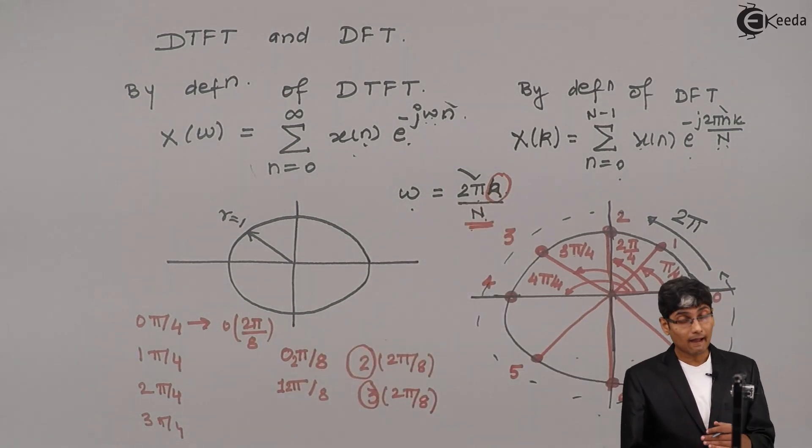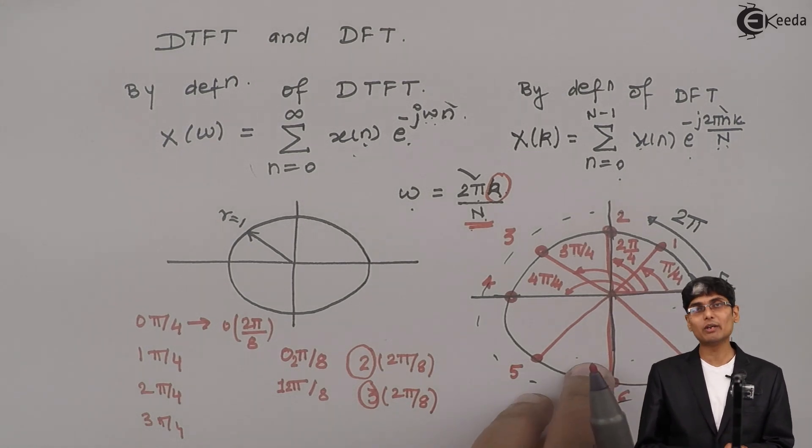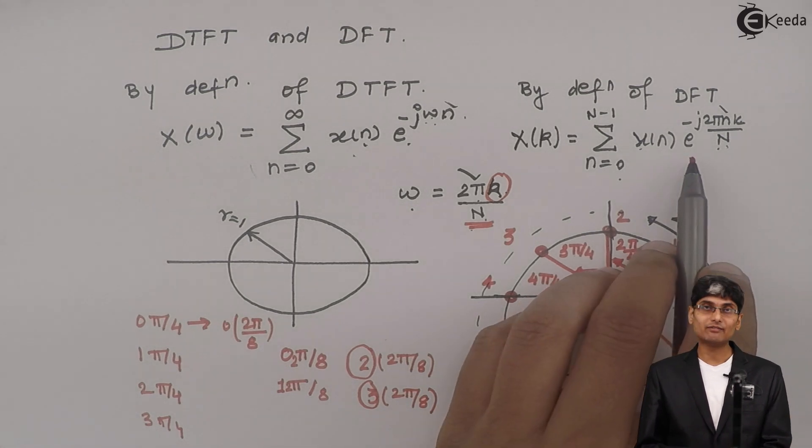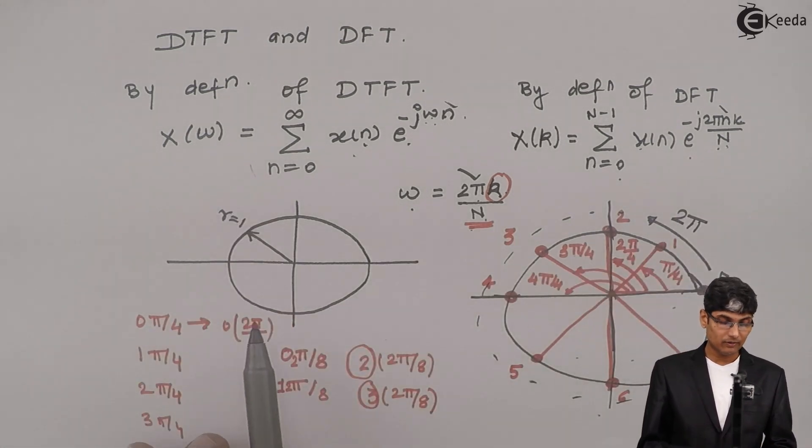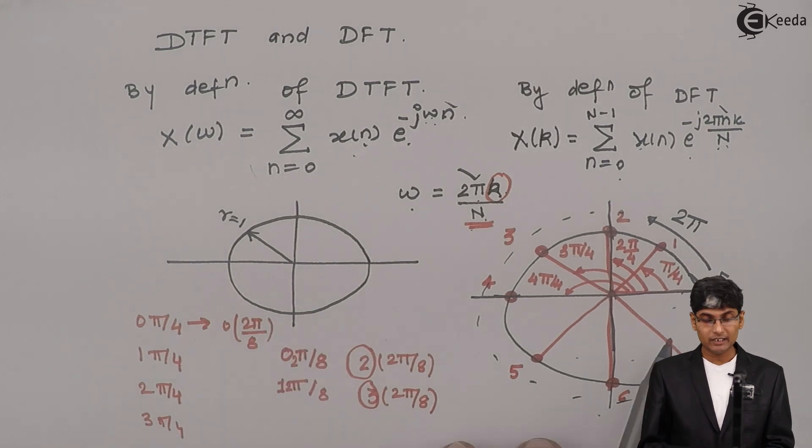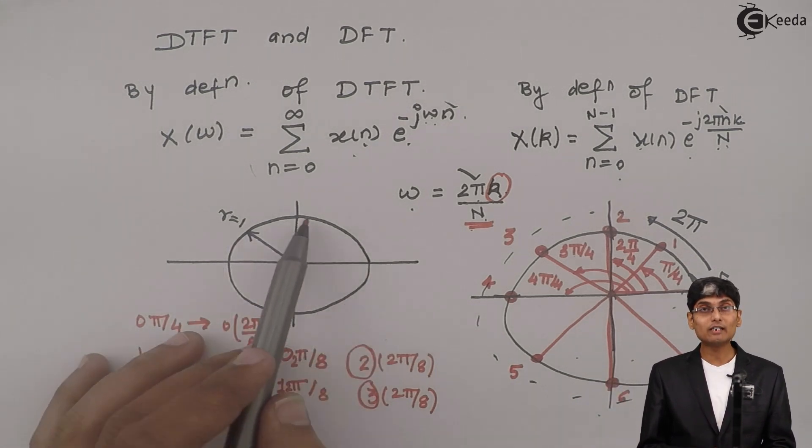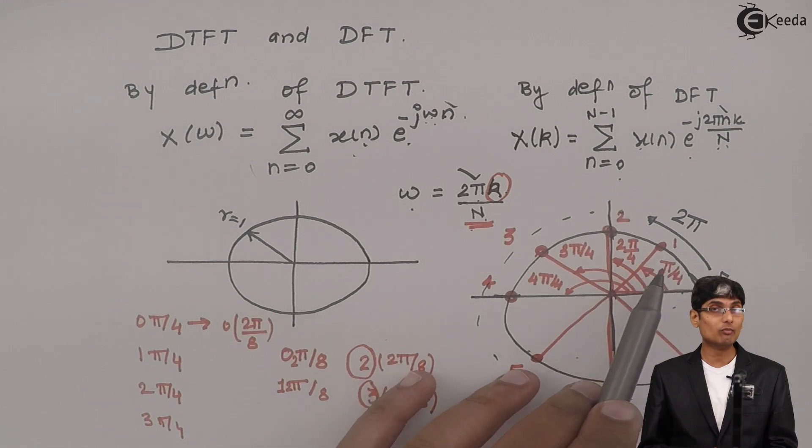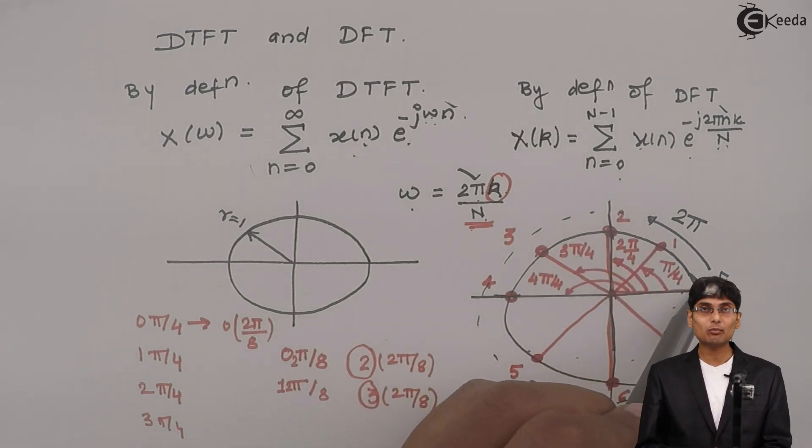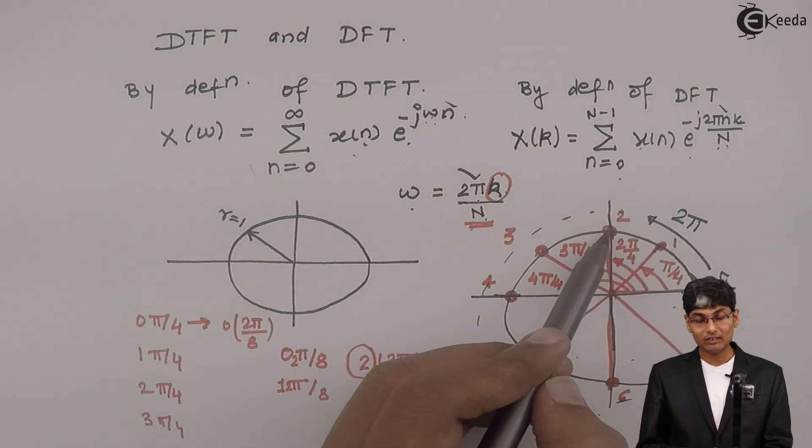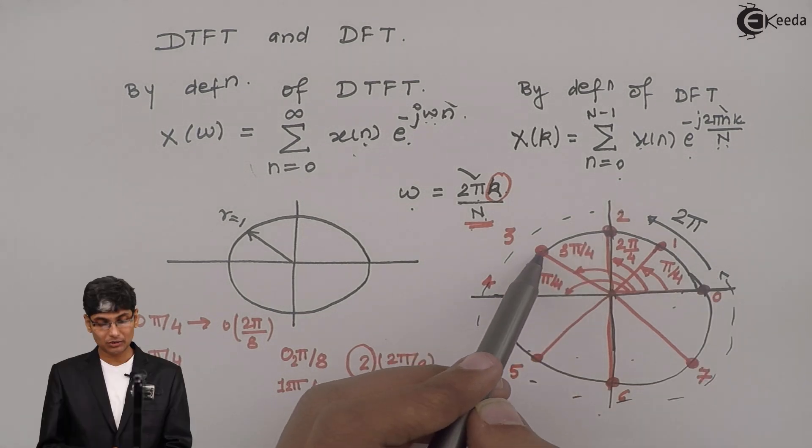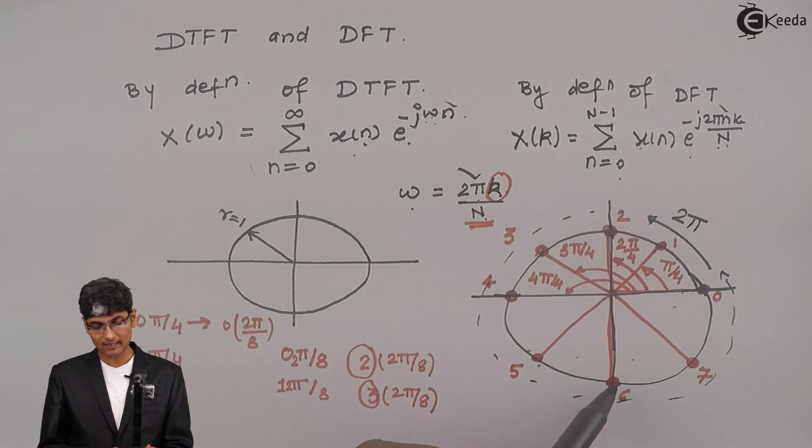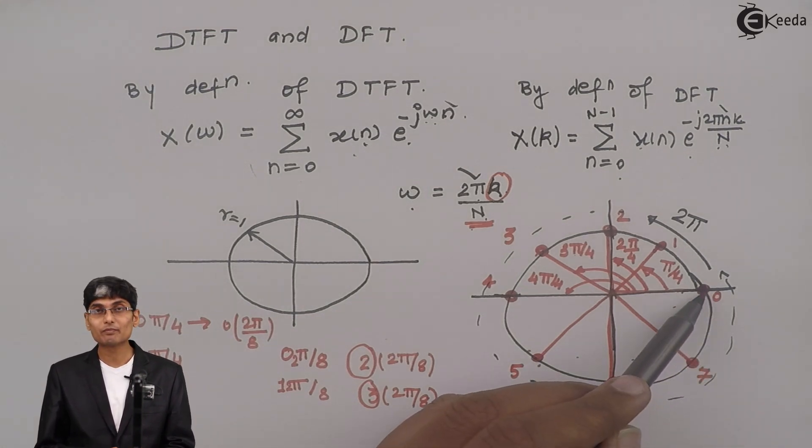So if I sample or discretize the frequency domain, then I am going to get a DFT. In DTFT, the frequency domain is continuous. In DFT, the frequency domain is discrete. Here I move on a circle continuously, but here we jump on a circle. We don't move but we jump. Because now I have 0th point and then I will have 1 point. I will not have anything in between. Then from 1 I will directly jump to 2, 2 to 3, 3 to 4, 4 to 5, 5 to 6, and 6 to 7. And after 7, I will go back to 0.